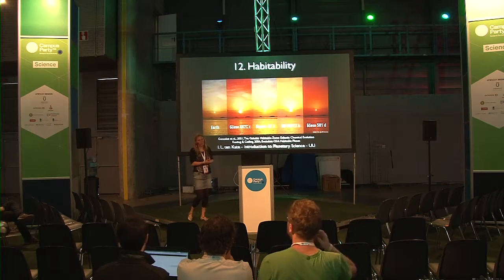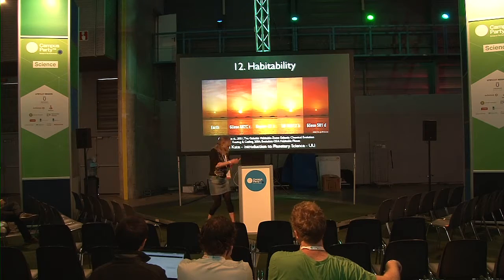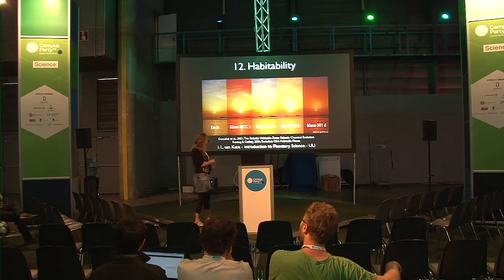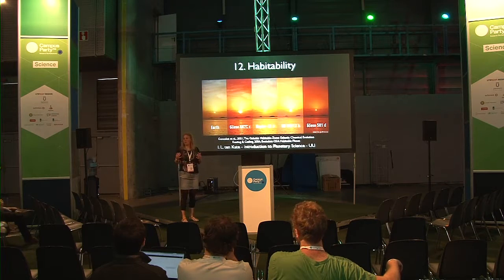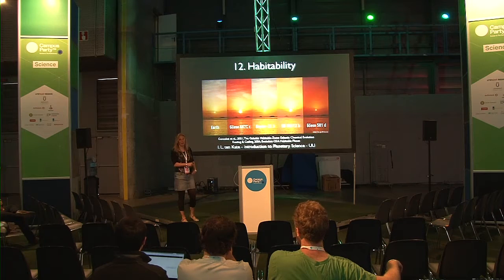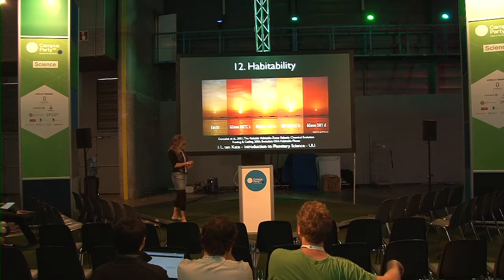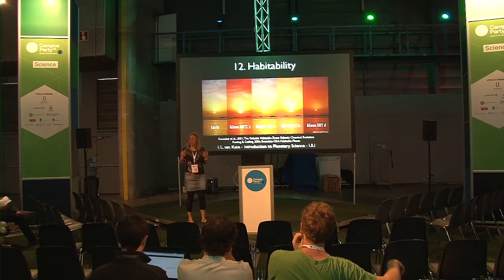So what I'm actually going to talk to you about today is habitability. And what you're seeing here is sunsets on Earth and on five different exoplanets which circle around different suns. What you see here is what it looked like if you would be on Gliese 581d, which is a terrestrial exoplanet that was detected a couple of years ago. This gives you an idea what it looks like if you would be on a terrestrial planet orbiting a different star than our own.